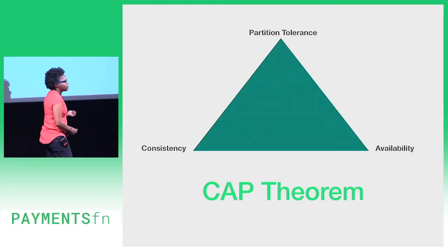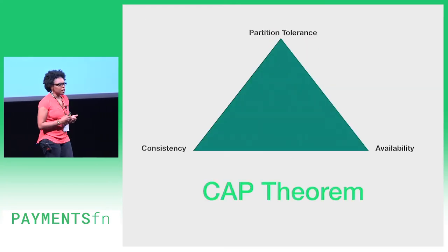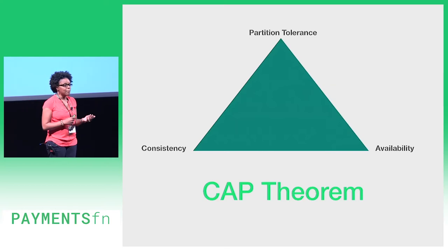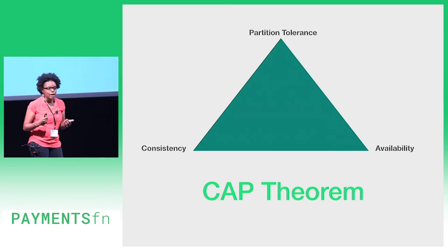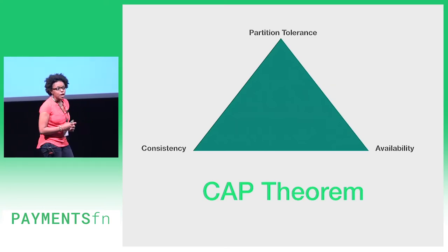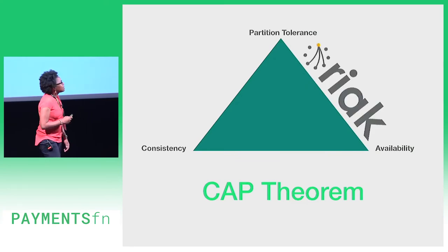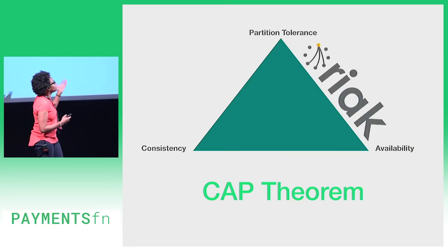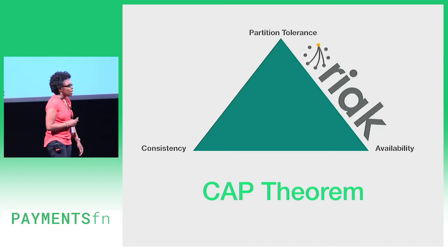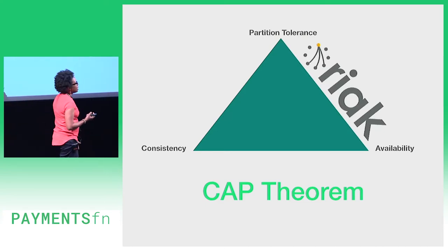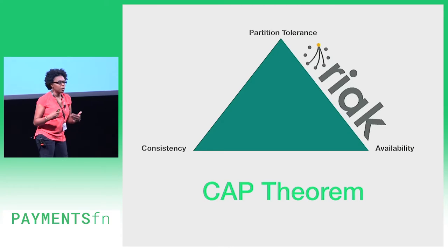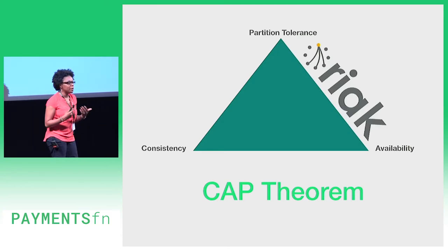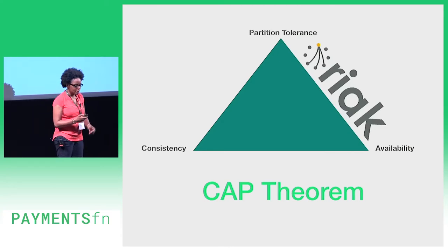Whenever you're choosing a database, you usually come into contact with the CAP theorem, which basically says you can't have all the things — you can only choose two. React actually sits with partition tolerance and availability, giving up consistency. So you might ask, why would a company like Spreedly give up consistency? We deal with payment methods, we deal with payment tokens — why would we give up consistency?